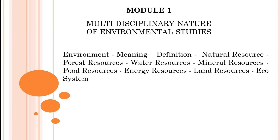Module 1 is the Multidisciplinary Nature of Environmental Studies. In this module, we will cover the elements: Environment meaning and definition, then Natural Resources. We will study different types of Natural Resources such as Forest Resources, Water Resources, Mineral Resources, Food Resources, Energy Resources and Land Resources. Each resource we will cover in detail. And the last one is Ecosystem.